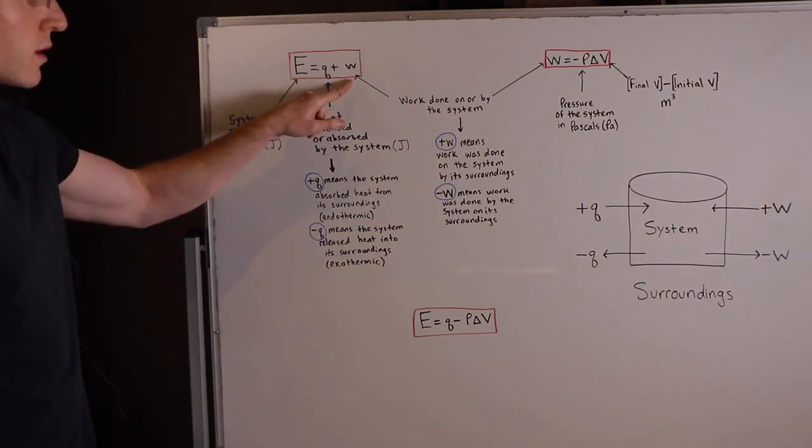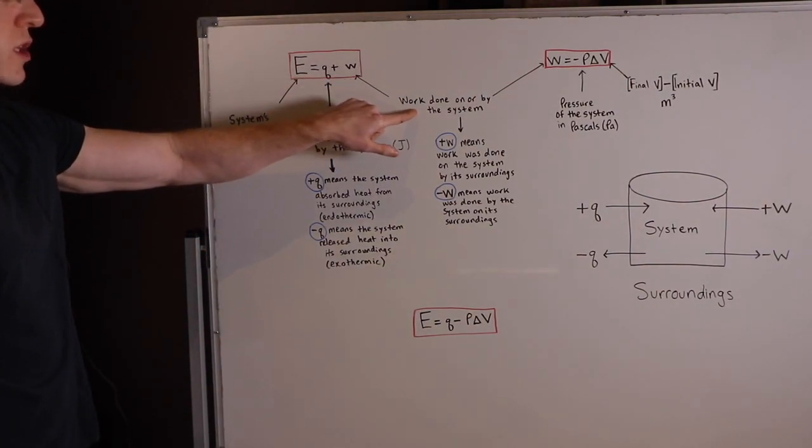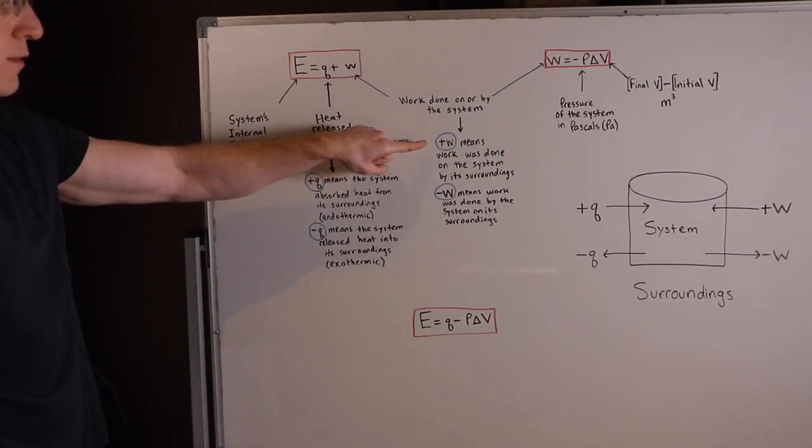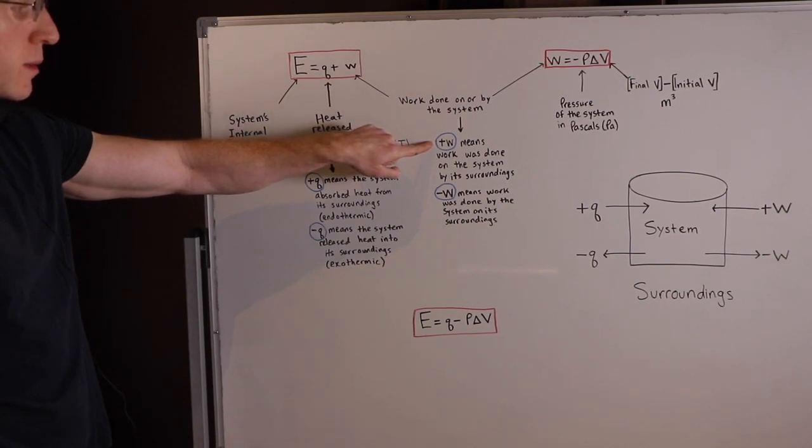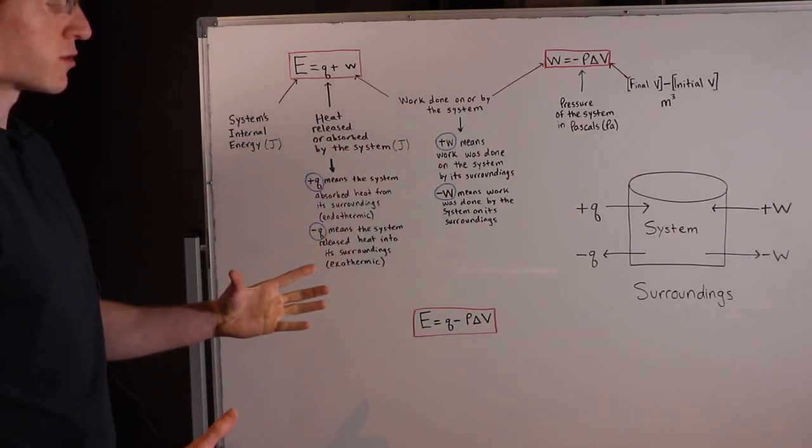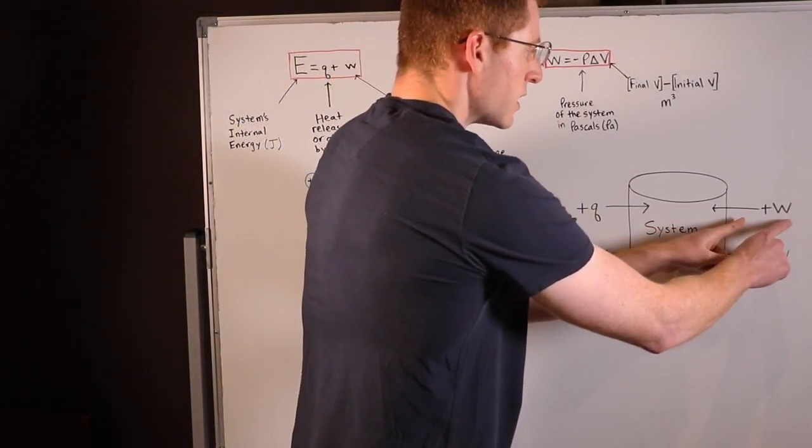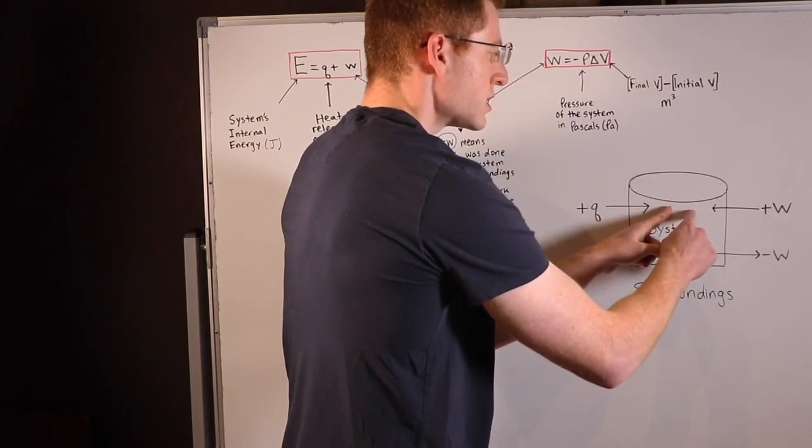Okay, what about this W here? Again, this is work done on the system or by the system. So when we have a positive work or a positive W, this means work was done on the system by its surroundings, and I've illustrated that right here. So in this case, the surroundings did work on the system.